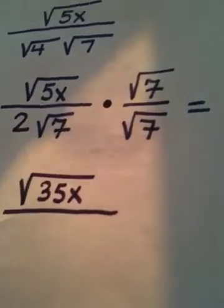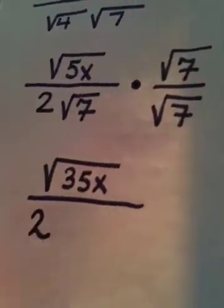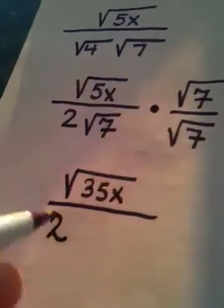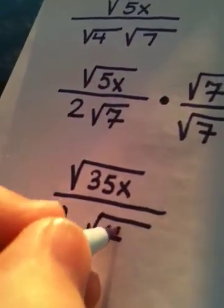In the denominator, here's a 2, right? The square root of 7 times the square root of 7 becomes the square root of 49.